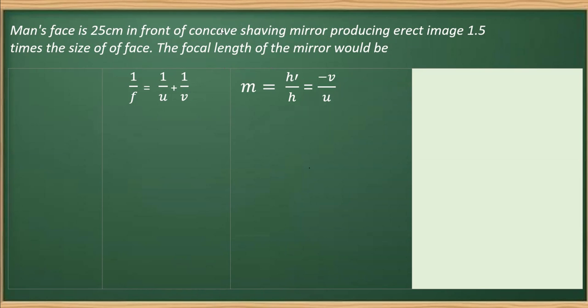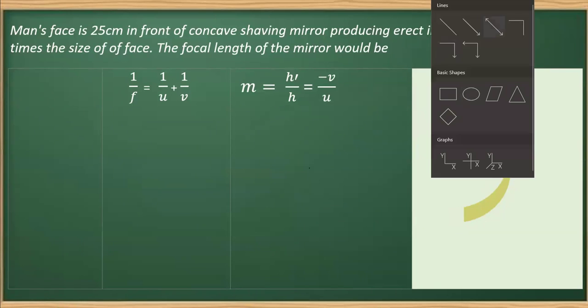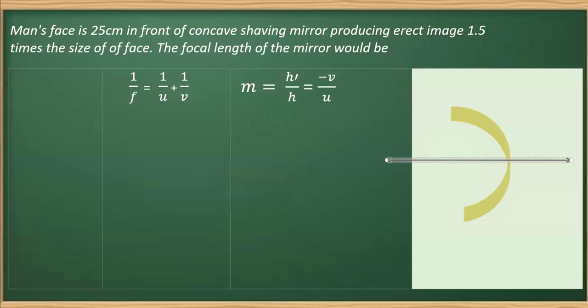And the image so formed is 1.5 times the size of the face. If we try to visualize the diagram, let's say I make one concave mirror. I'm going to draw its principal axis, this will be the principal axis. And as you can see, the image formed is 1.5 times the size of the face.